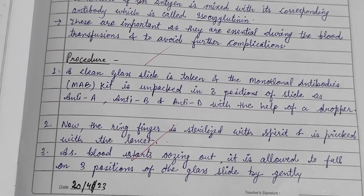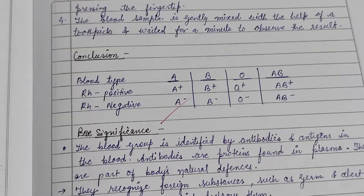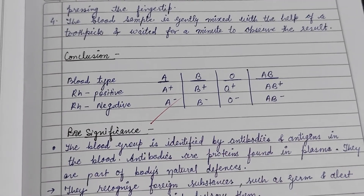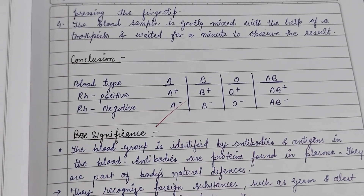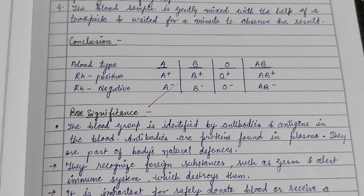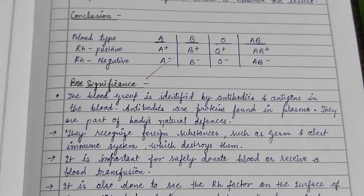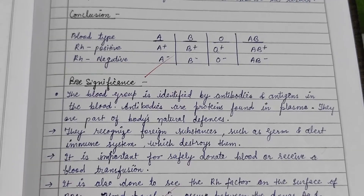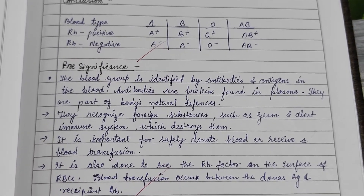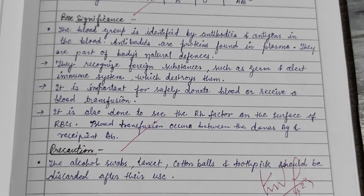The procedure is as follows. Blood type may be Rh positive or Rh negative. If Rh positive, it will agglutinate in the D monoclonal antibody, while if it is Rh negative, it will not agglutinate with the D monoclonal antibody.